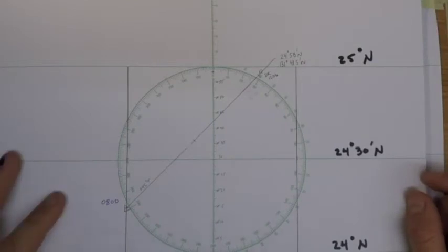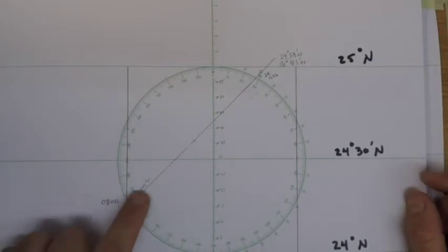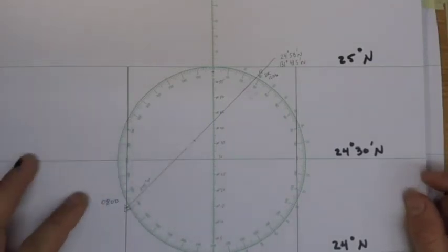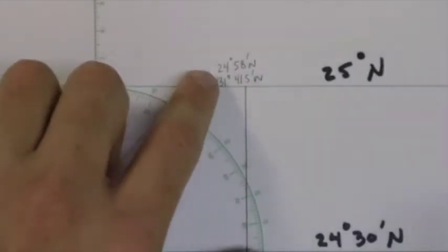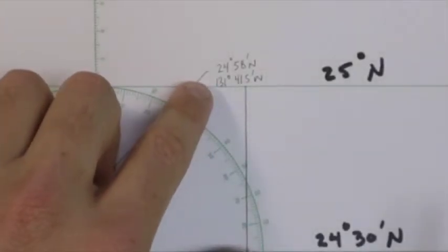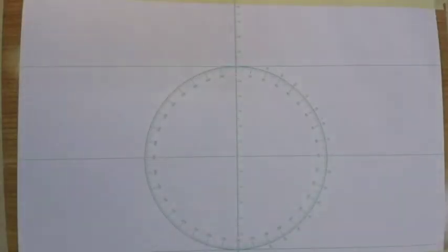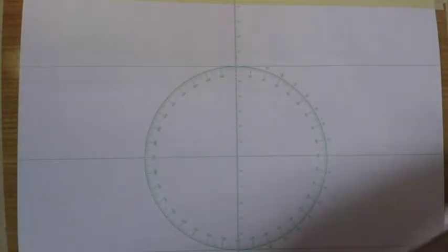Okay, so I plotted out on the plotting sheet 045 for 61 and a half miles, and I ended up with a position of 24° 58' N, 131° 41.5' W. So now I'll do the same process but I'll do it in terms of mid-latitude sailing, and then we'll see if we come up with the same position.